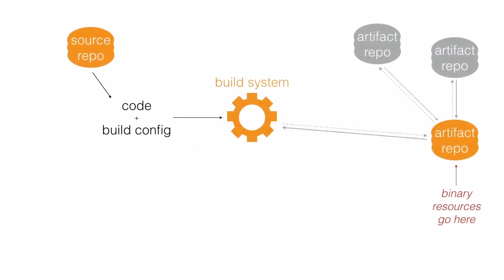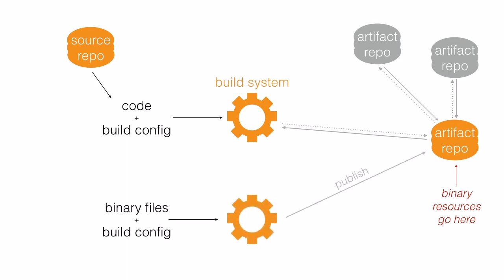Having said that, we'll have an artifact repository for our images, movies, sounds and other large binaries. How do we get them in there? Well, as our build system knows how to publish artifacts, what we're going to do is use another build config.